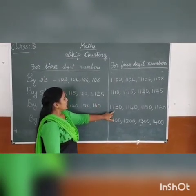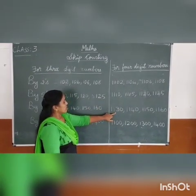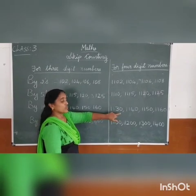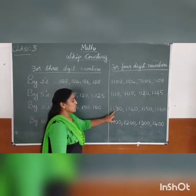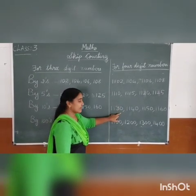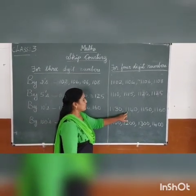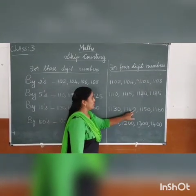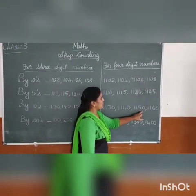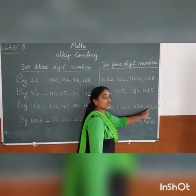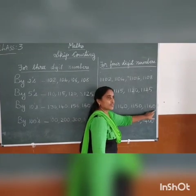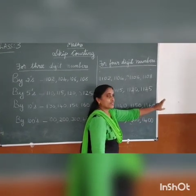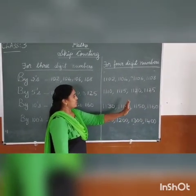Next one, by 10s. For 4-digit numbers: 1,130 — 1,140 — 1,150 — 1,160 — 1,170. Skip counting by 10s.